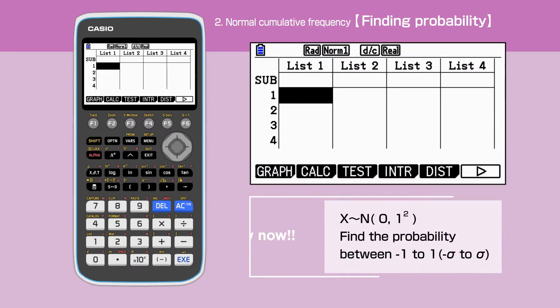In this video, we are going to solve the following question. X is a random variable that is normally distributed with mean 0 and standard deviation 1. Find the probability when X is between minus 1 and 1.